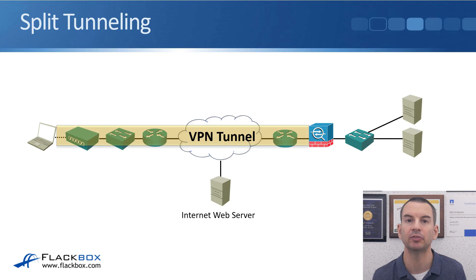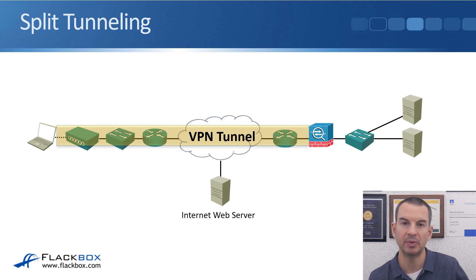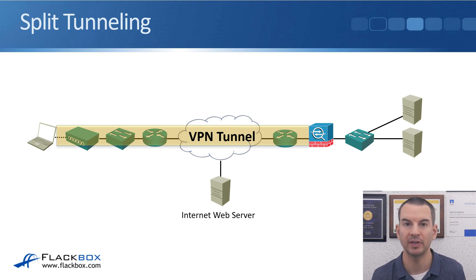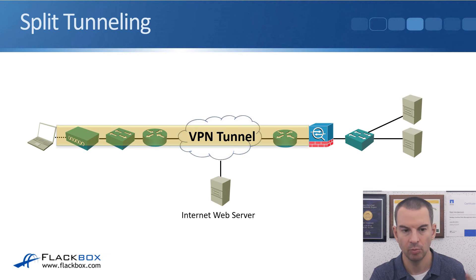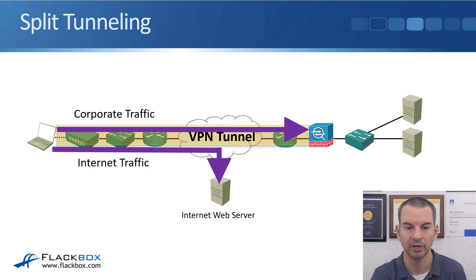There are a couple of different ways this can be enabled, chosen by the network security administrator: split tunneling or full tunneling. With split tunneling, corporate traffic goes over the VPN tunnel to the corporate site, while your public web traffic — for example, browsing normal sites on the internet — goes out directly to the internet and does not go through the tunnel. So corporate website traffic is encrypted through the tunnel, but normal internet browsing goes out directly.